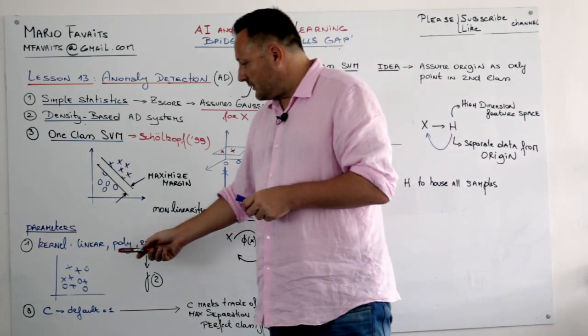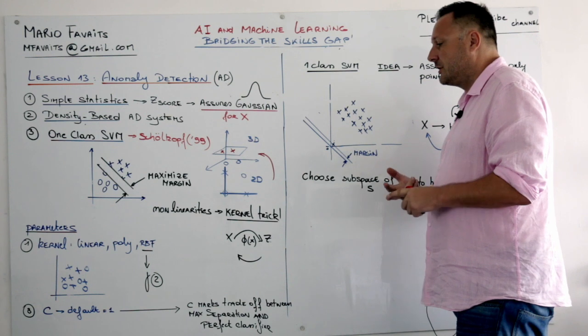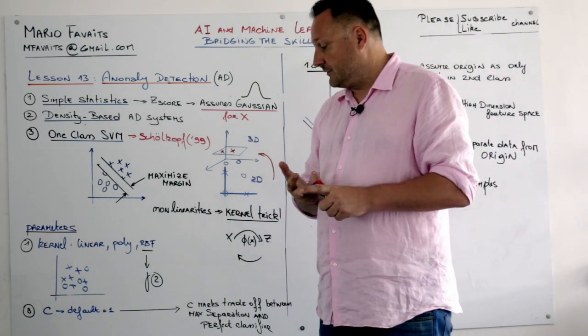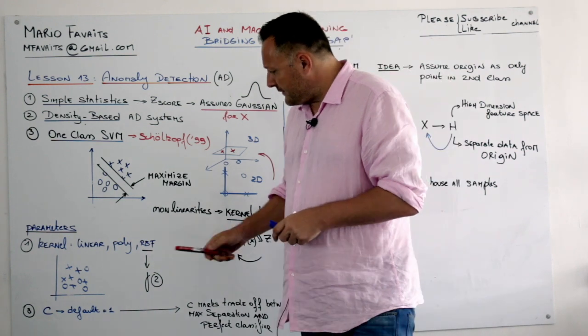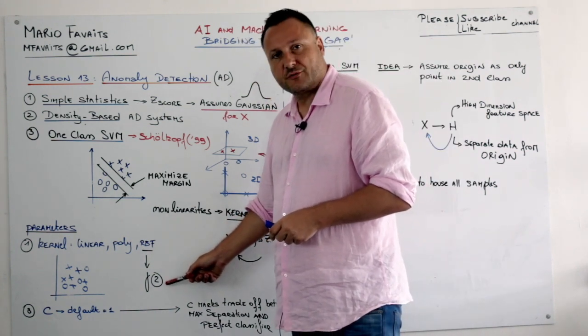So one parameter to choose is a kernel. We have linear kernel, polynomial kernel and RBF which is a radial basis function. If we choose the radial basis function we have another parameter to choose from which is gamma.